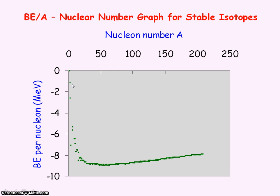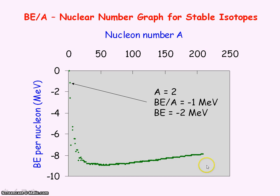If we consider a nucleus with two nucleons, we can see from the graph that the binding energy per nucleon is approximately minus one MeV. So the total binding energy equals the binding energy per nucleon multiplied by the number of nucleons, giving a total binding energy of minus two MeV. Iron-56 has the largest binding energy per nucleon, meaning its nucleus is the most tightly bound. On average, it needs the greatest energy to separate each nucleon from the nucleus.